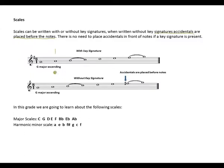Here is an example of a major scale ascending. The first example has a key signature at the beginning, so there is no need to put accidentals before the note. The second example is without a key signature, so an accidental was placed before the F to raise it, making it an F sharp. Remember, put accidentals before the note if a key signature is not present.